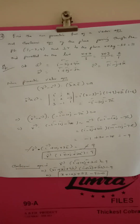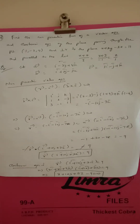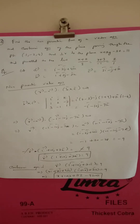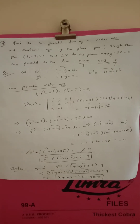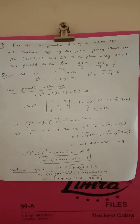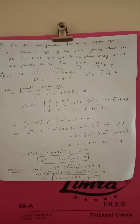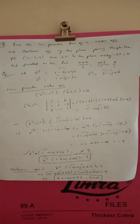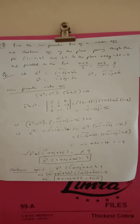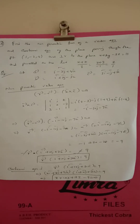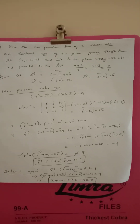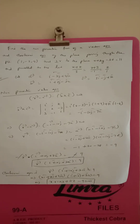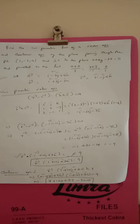Exercise 6.7, sum number 4. Find the non-parametric form of a vector equation and Cartesian equation of the plane passing through the point (1, -2, 4) and perpendicular to the plane x plus 2y minus 3z equal to 11, and parallel to the line x plus 7 by 3 equal to y plus 3 by minus 1 and z by 1.